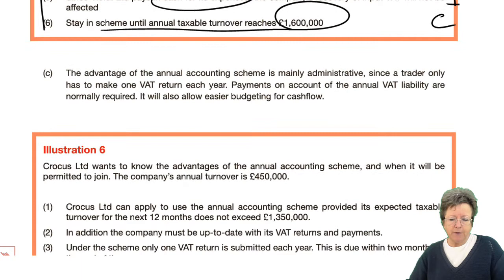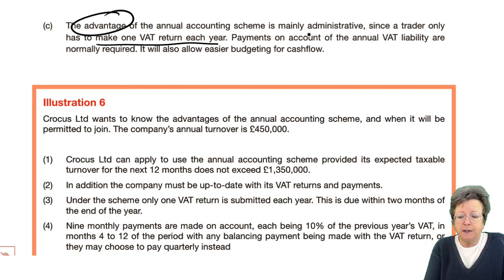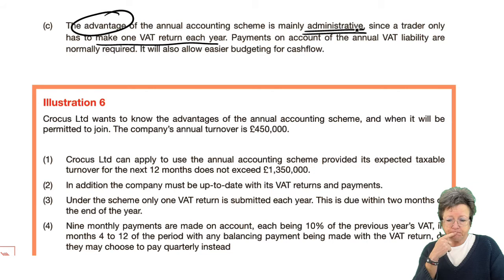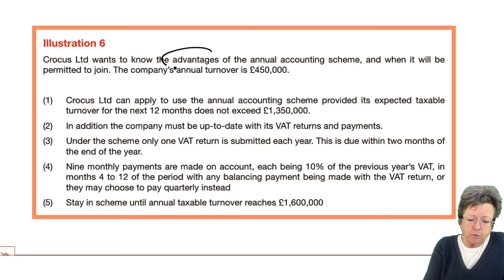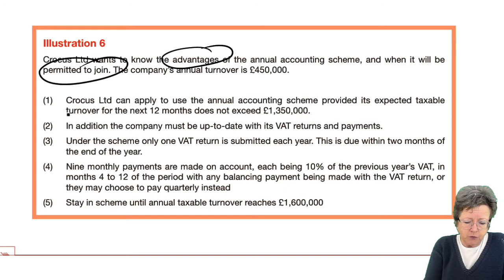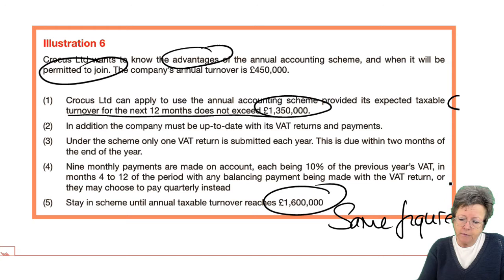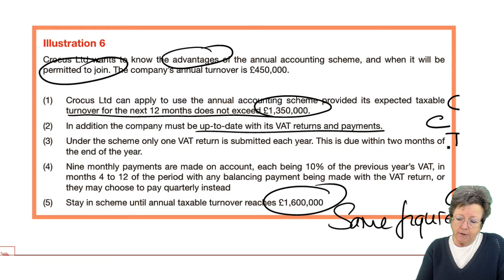The annual accounting scheme is what it says: you only make one VAT return a year. The advantage is mainly administrative — you only have to do it once as opposed to four times. It's also easier to budget for cash flows. For the illustration, they have a turnover of £450,000. You can apply provided your turnover is not more than £1.35 million — the same figures as the cash accounting scheme. Again, you must be up to date, which is another condition. The implication is one return a year.